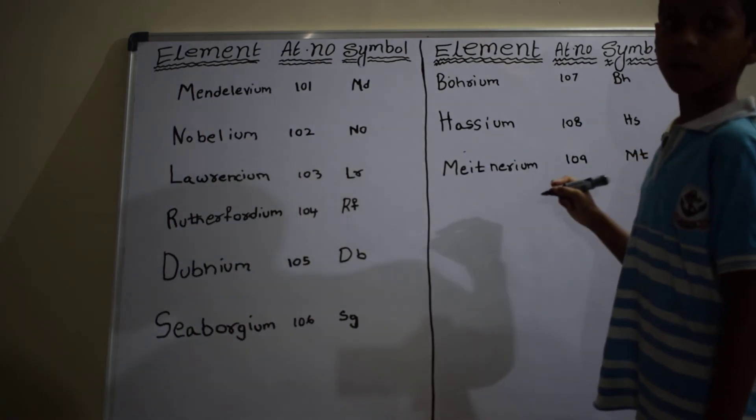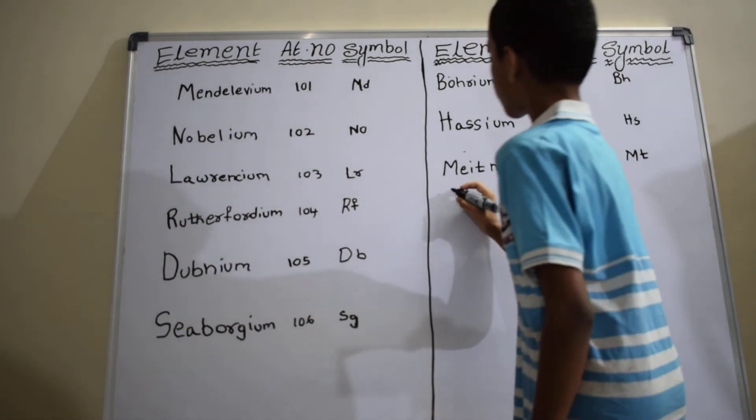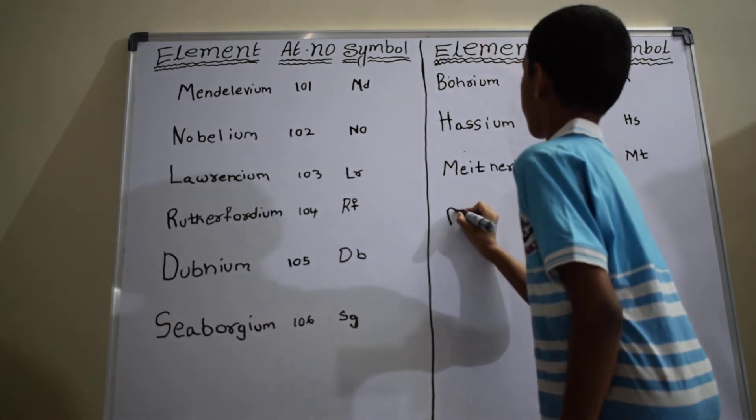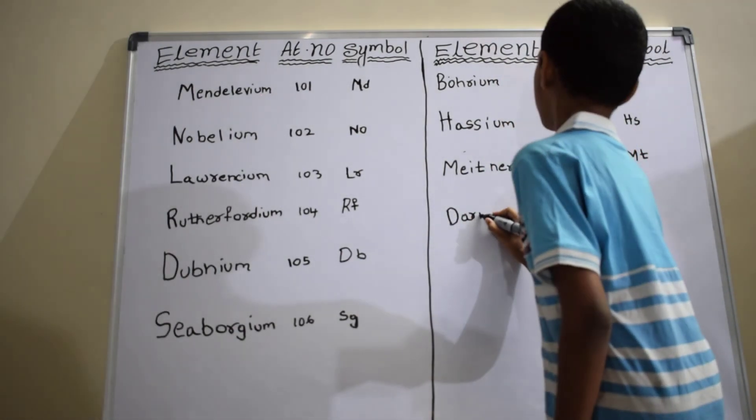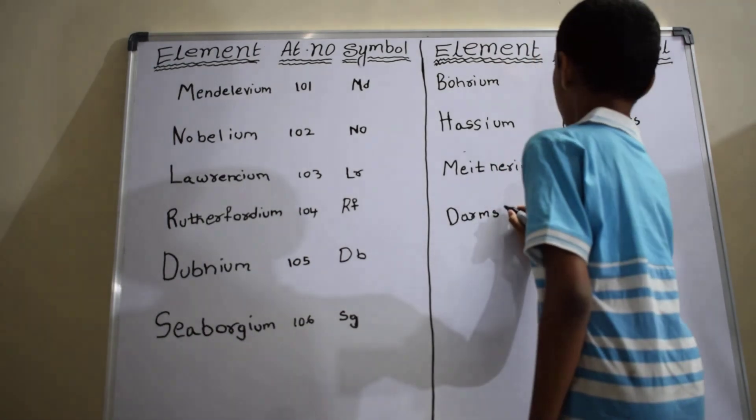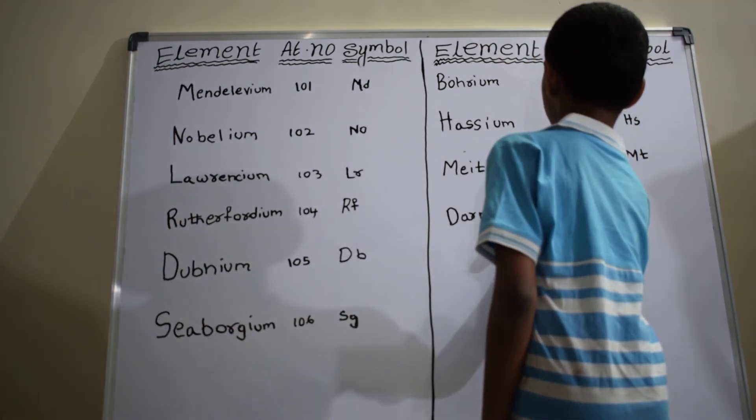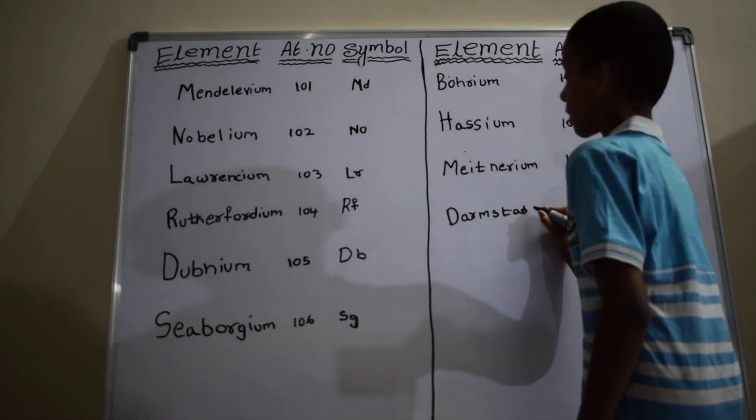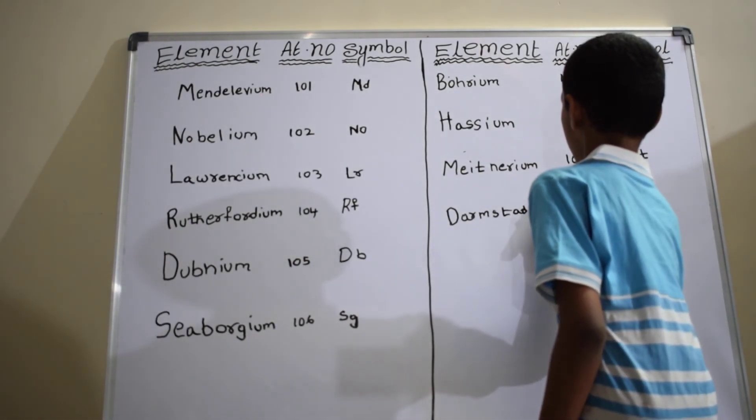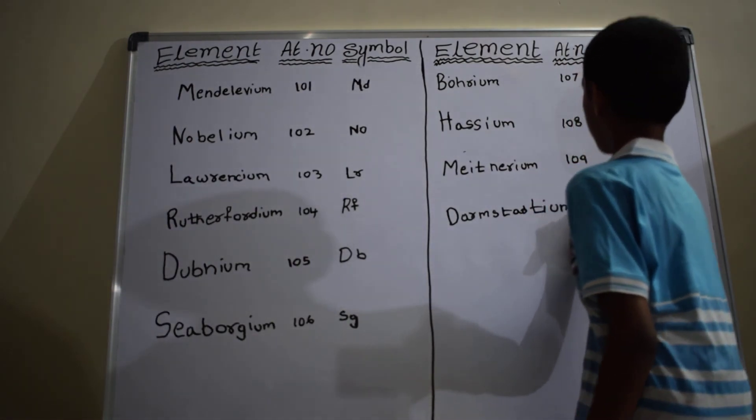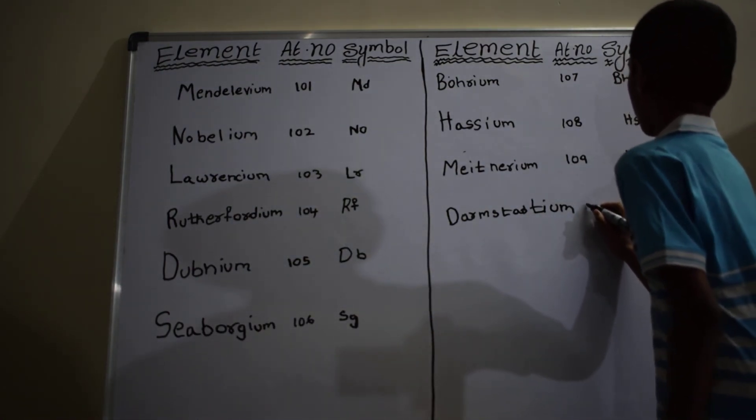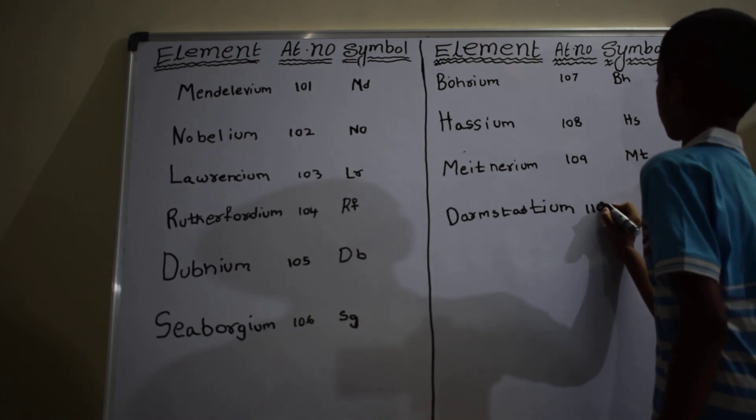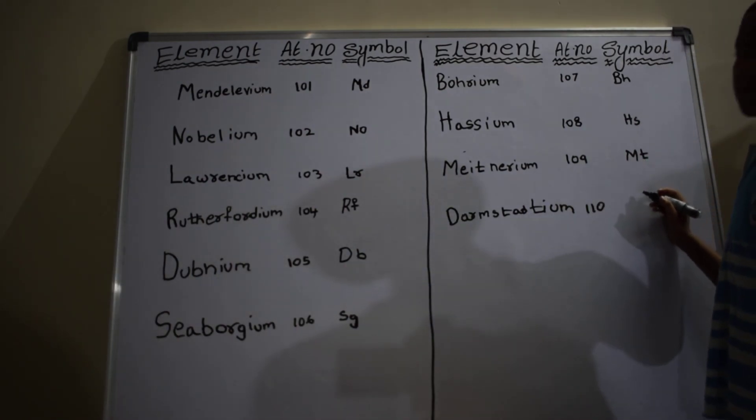Next element is Darmstadtium. Atomic number is 110. Symbol is Ds.